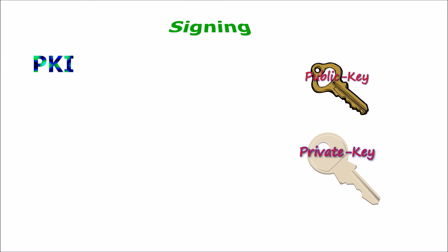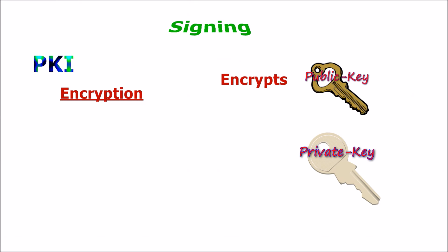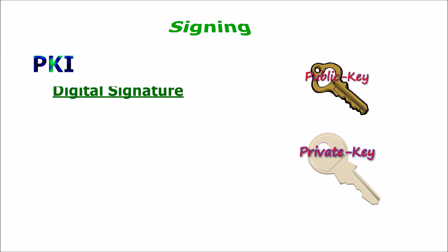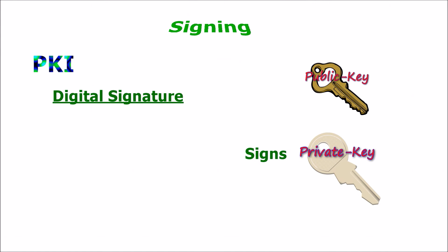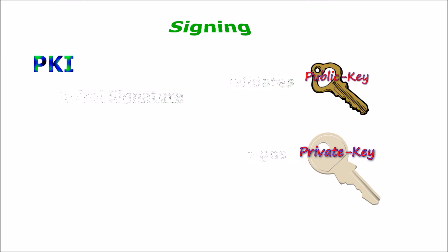Public keys and private keys are at the heart of the PKI. In encryption, the public key is used for encrypting, and the private key is used for decrypting. But with digital signatures, it is the opposite. Here the private key is used for signing the data, and the public key is used to validate the signature.